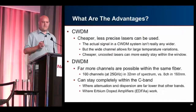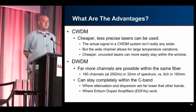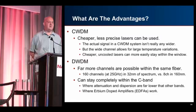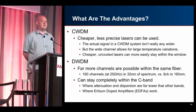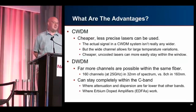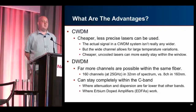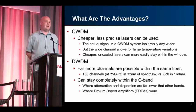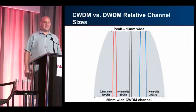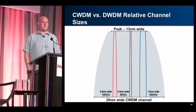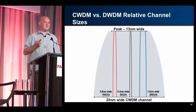CWDM is cheaper — you can use less precise lasers with wider temperature variation tolerance. DWDM lets you have many more channels: 160 channels at 25GHz in 32nm of spectrum, versus eight channels in 160nm for CWDM. The nice thing about DWDM is you can stay completely in C-band, get a lot of channels, and C-band is where an EDFA — erbium-doped fiber amplifier — works. That's basically a simple, easy way to make the light brighter over this particular piece of spectrum.